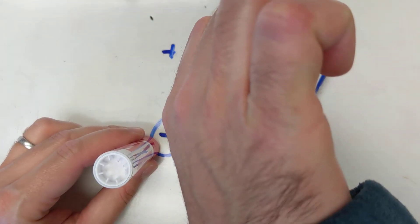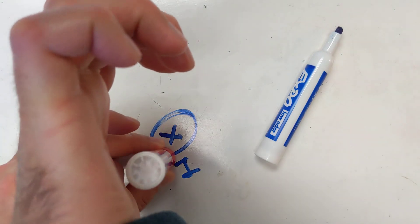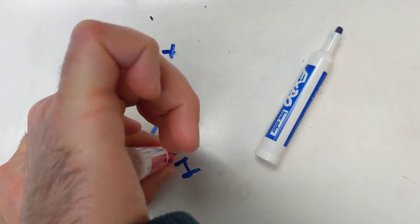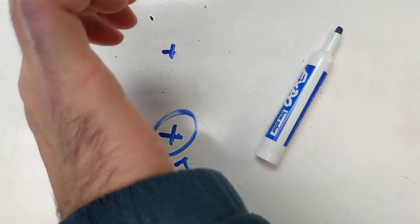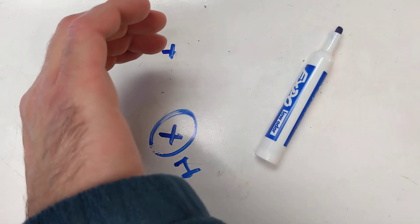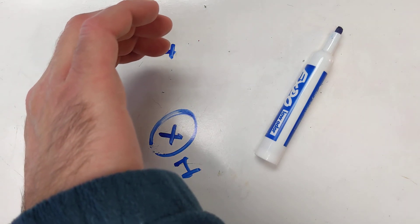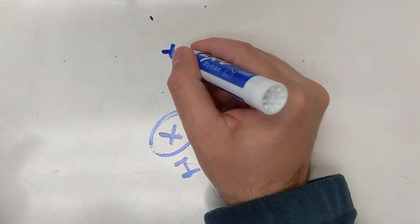I would do the same thing — I would place my thumb in the direction of the current into the page, and my fingers are now pointing this way.